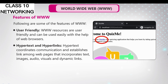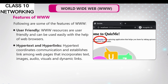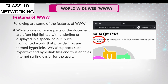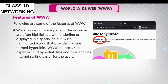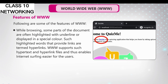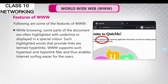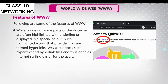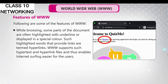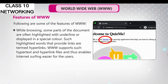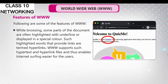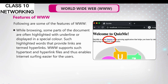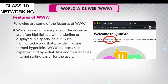images, audio, visual, and dynamic links. While browsing, some parts of the document are often highlighted with underlined text or displayed in a special color. Such highlighted words that provide links are termed hyperlinks. WWW supports such hypertext and hyperlink files and thus enables internet surfing easier for the users.